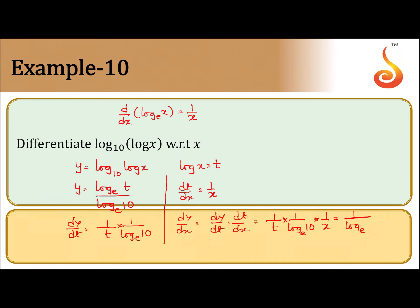Log base e x into 1 by log base e 10 into 1 by x. Here just recall what is the base change. Log base a b, if you want to change into base e, is log base e b by log base e a. This is the base change formula which we have used in this.